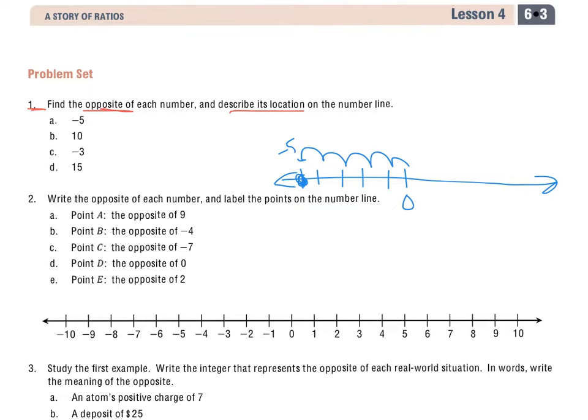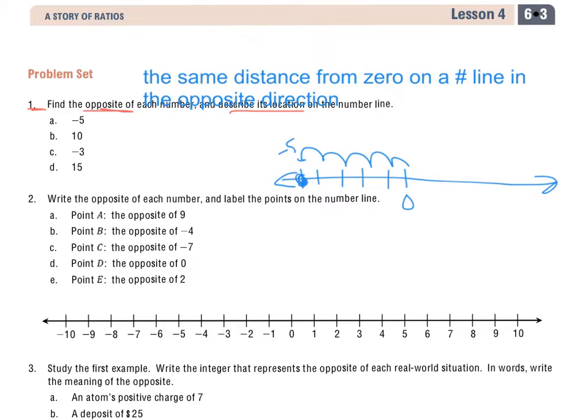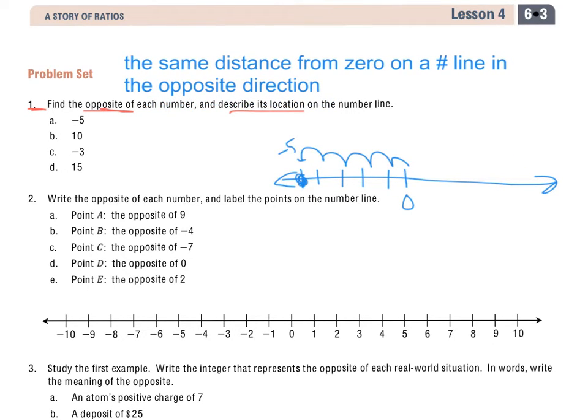Now I know that the opposite means the same distance from 0 on a number line in the opposite direction. And that's not your technical definition, but it's a good definition to go for from the start. So to find the opposite of this, I know that if I jumped 5 to the left,